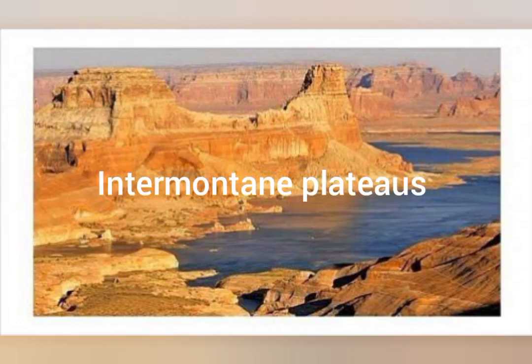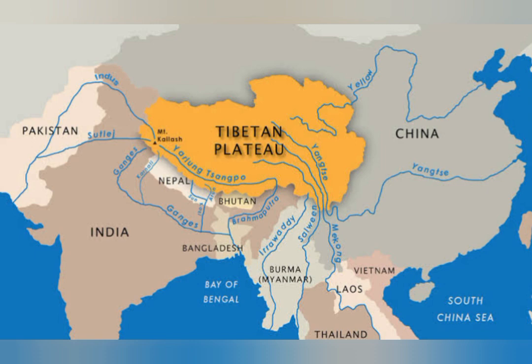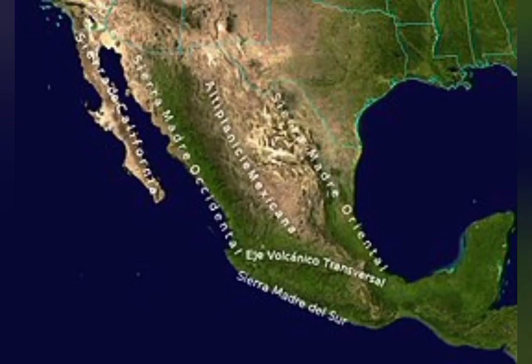The first type of plateaus are intermountain plateaus. They are associated with mountains as they are surrounded by mountains on all sides. Intermountain plateaus are the highest among all other plateaus of the earth. An example is the plateau of Tibet, also called the roof of the world, which is 4500 meters high. Another example is the Mexican plateau, which lies between the eastern and western Sierra Madre mountains.